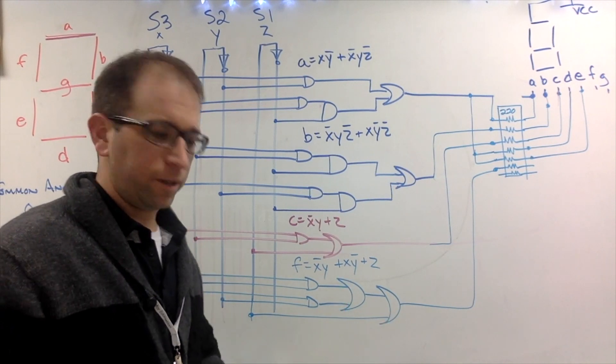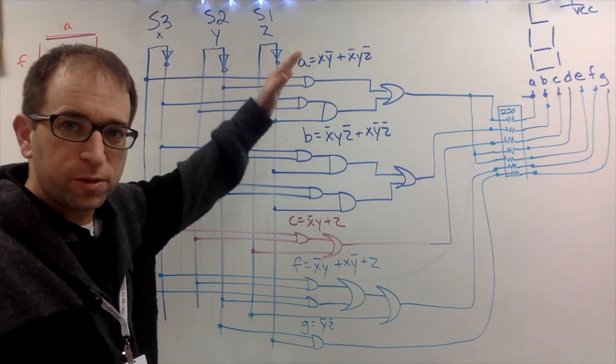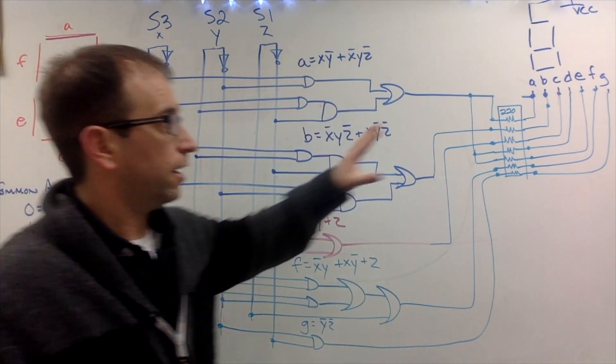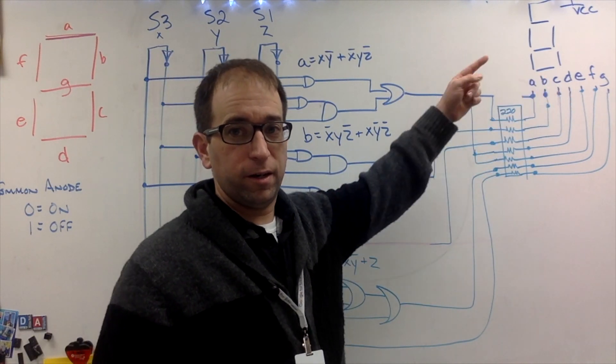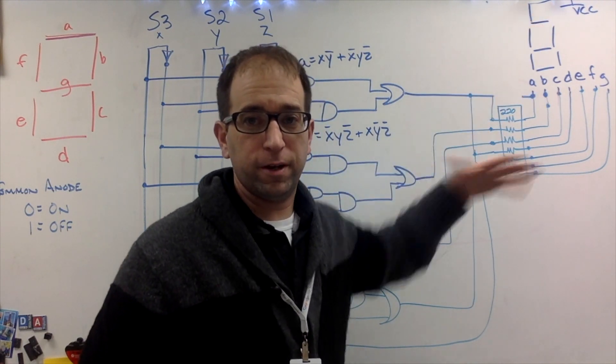All right, I fit F right there and I'm going to fit G right below that. So here's my drawing. I've got my switches, I've got my formulas, I've got my gates, I've got my resistor pack, my 220 ohm resistor pack, seven segment display right up here with power up there.